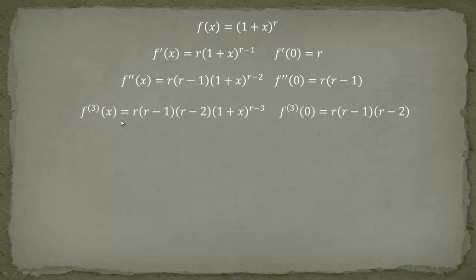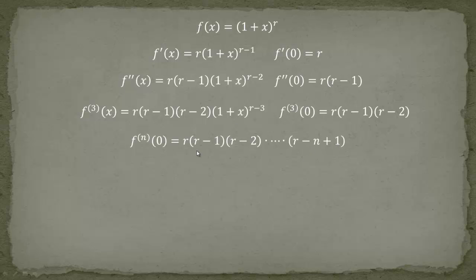Taking the third derivative and plugging in x equals 0, we are left with r times (r - 1) times (r - 2). It's easy to see that the nth derivative evaluated at 0 equals the product r · (r-1) · (r-2) · … · (r - n + 1). We can verify for n = 3: r times (r-1) times (r - 3 + 1) = r(r-1)(r-2), which is correct.